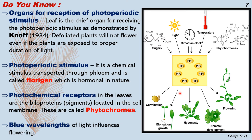The blue wavelength of light influences flowering. Another image shows sugars required, light, and the circadian cycle — the biological clock. Just as a person wakes at the same time without an alarm due to the circadian clock, plants similarly respond to biological timing. Other factors shown include temperature, phytohormones, flowering, stomatal development, hyponasty, elongation with growth, and germination, all influencing how plants flower.